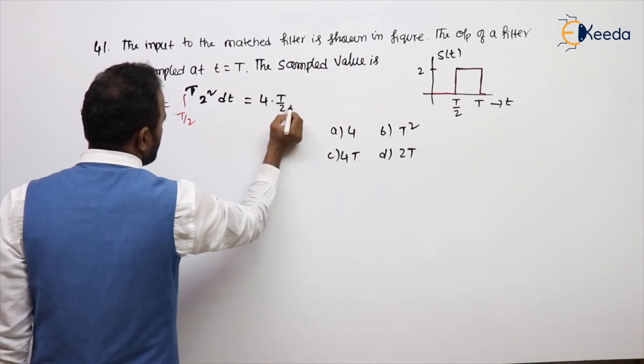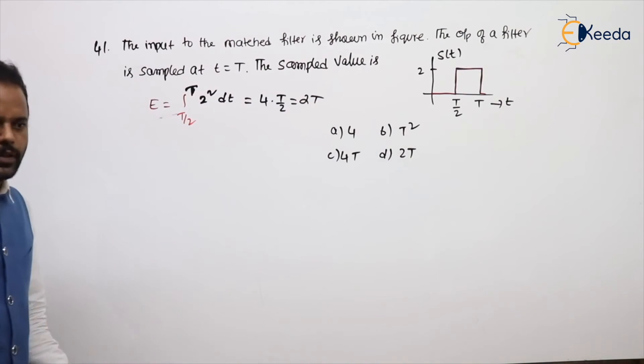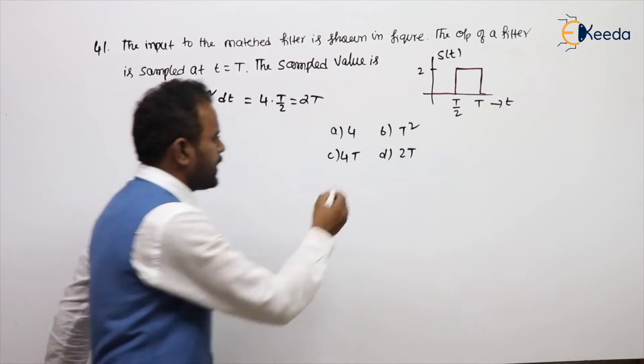So T is nothing but T by 2, that is nothing but 2T. So 2T means you need to take option D.